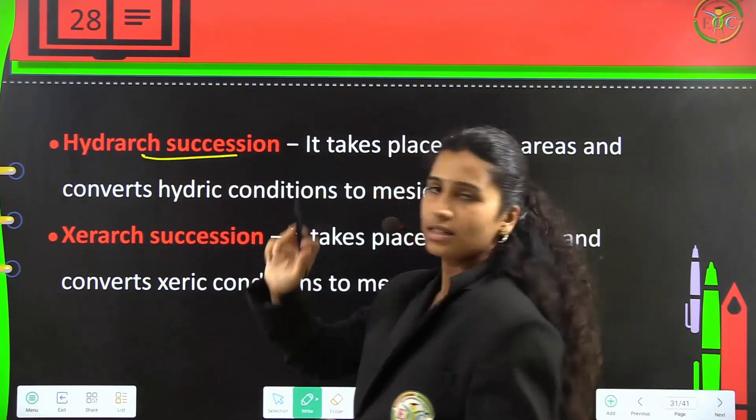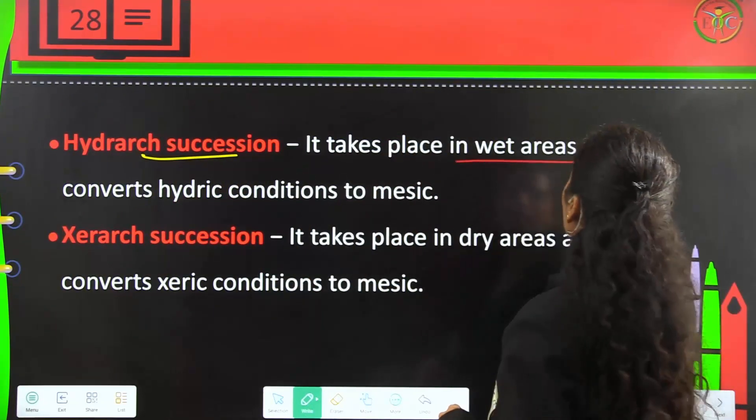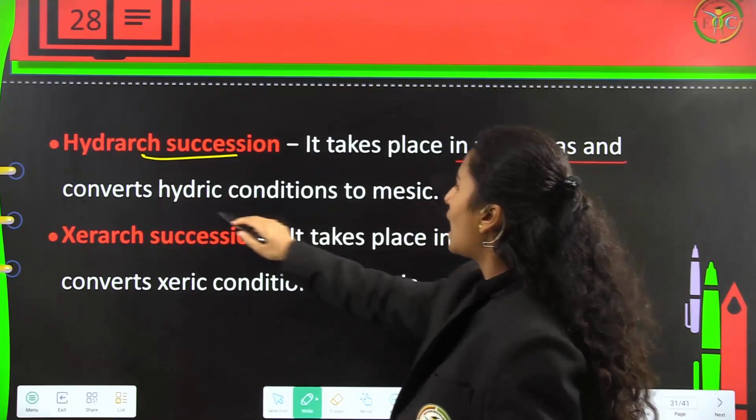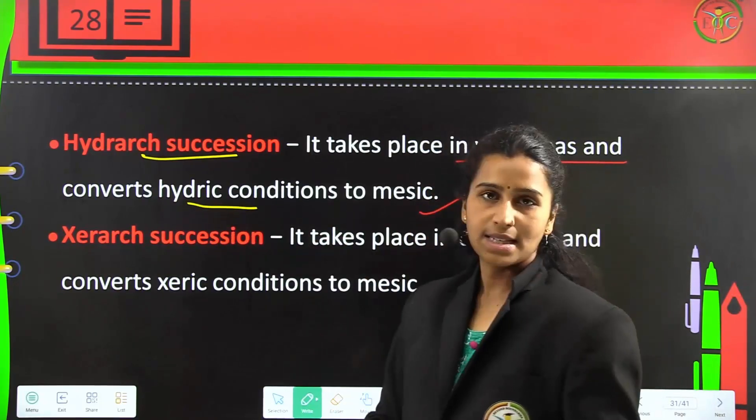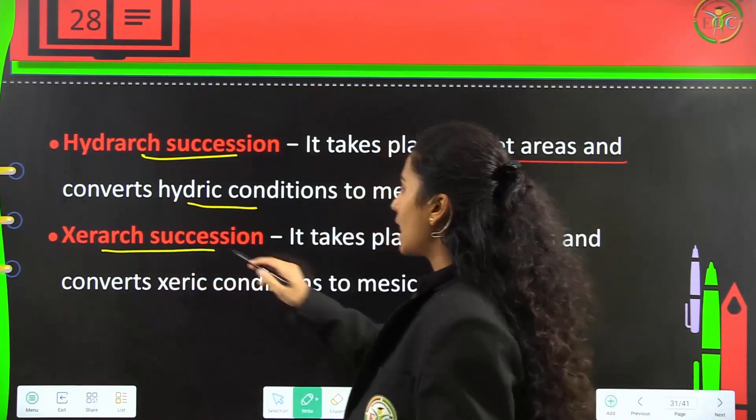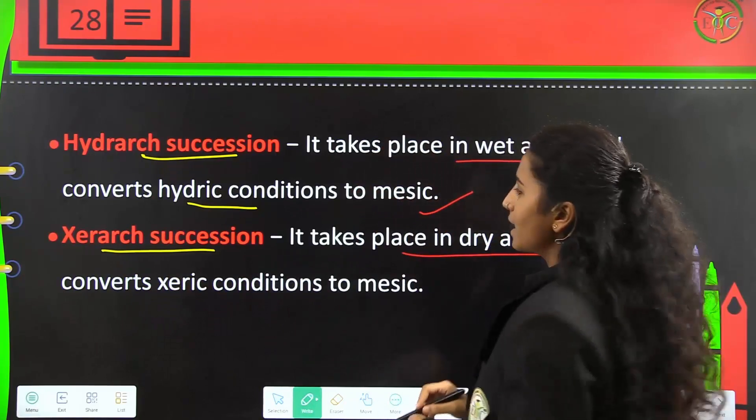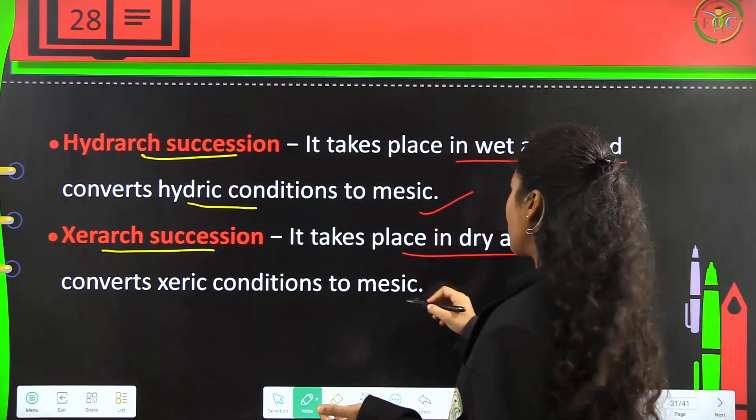Hydrarch succession takes place in wet areas and converts hydric conditions to mesic. Xerarch succession takes place in dry areas and converts xeric conditions to mesic.